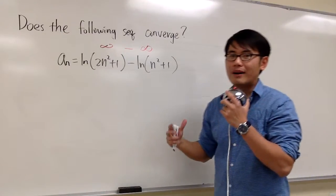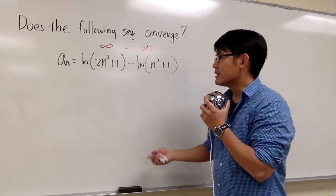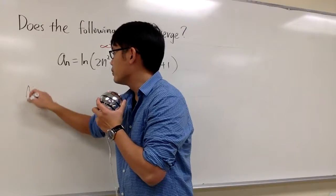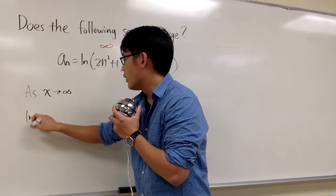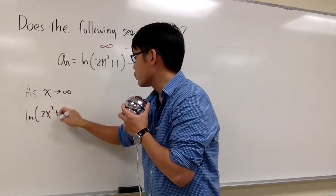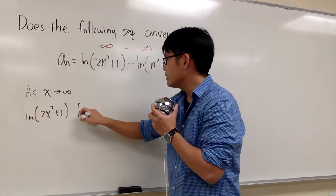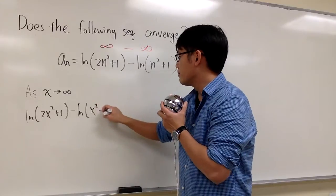Usually, we will have to rely on L'Hôpital's rule. So, let's go ahead and change the n to x. And we will say, as x goes to infinity, I'll write this down as ln(2x² + 1) minus ln(x² + 1).